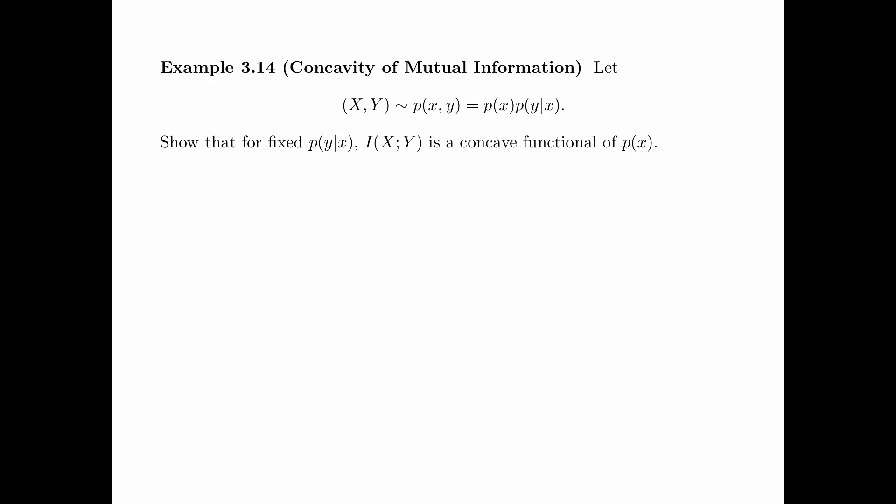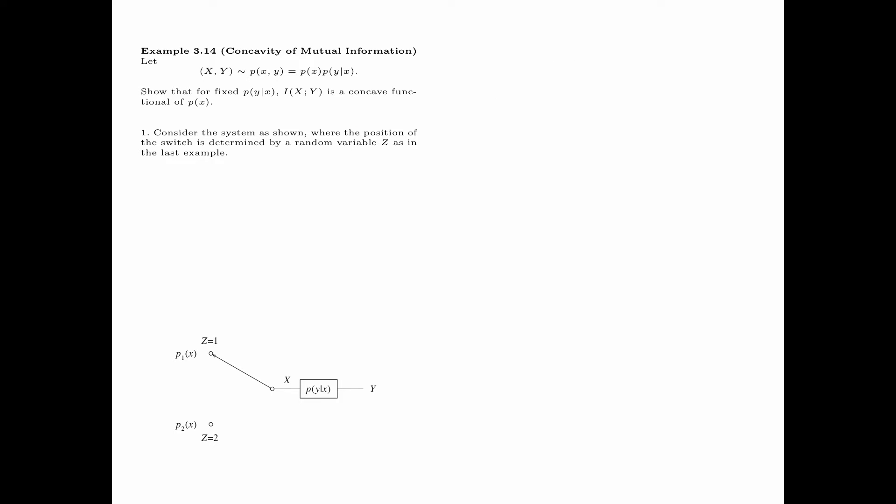In the next example, we show the concavity of mutual information. Specifically, let the pair of random variables x and y have distribution p(x,y) = p(x)·p(y|x). We are going to show that for fixed p(y|x), I(x;y) is a concave functional of p(x). Consider the system as shown, where the position of the switch is determined by a random variable z as in the last example. When the switch is up, x takes distribution p1(x); when the switch is down, x takes distribution p2(x). In this setup, when x is given, y is independent of z, because the channel output y depends on the switch position only through the channel input x. So z → x → y forms a Markov chain.